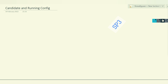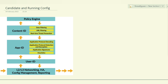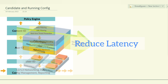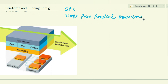Today we are going to try to understand what is candidate and running configuration. So far we have seen a single pass approach where we learned that the latency of processing the task decreases — that's the power of the single pass approach. Parallel to this, there is also the component for single pass parallel processing, which they call SP3 architecture. SP3 stands for single pass parallel processing — you can see the three P's, that's why they say SP3.